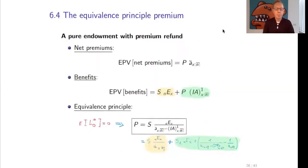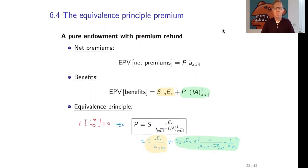How do the net premiums look like? The net premiums in such a contract are constant premiums p, that are paid as long as the insured of age x is surviving, but not longer than n years. So there is a premium upon survival of the insured at times 0, 1, 2 to n-1.